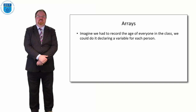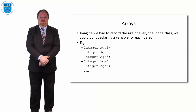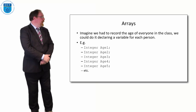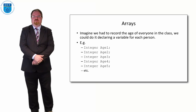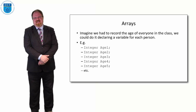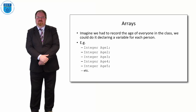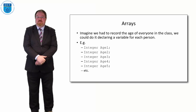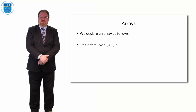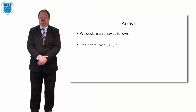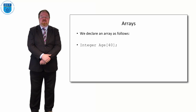Imagine if we had to record the age of everybody in the class. We could do that by declaring a variable for each person — integer age1, integer age2, integer age3, all the way down. If we had 25 students we'd need 25 variables, 40 students means 40 variables, or with my first year class of 108 students we'd have to declare 108 variables. Whereas with an array we declare one collection of 40 integers with the handle 'age'.